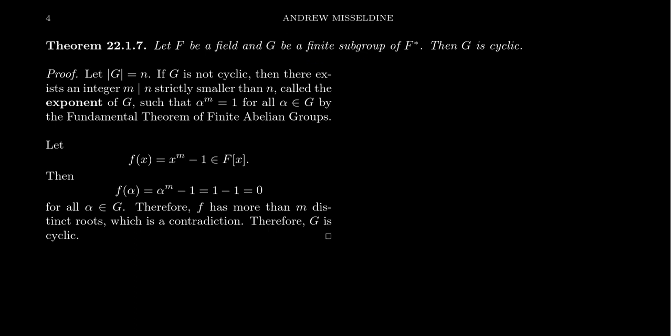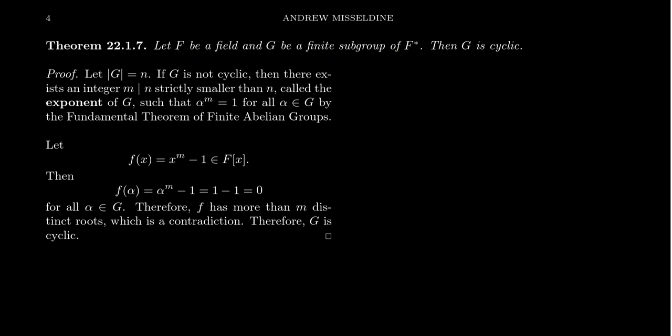This is important for finite fields: if F is a finite field, then F* is a finite group, and therefore every subgroup of F*, including F* itself, is a finite subgroup. So for finite fields, the group of units is cyclic. When you look at a finite field multiplicatively, it's basically just a cyclic group plus a zero element. Additively, it's an elementary abelian group — and that's every finite field.